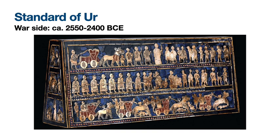We are currently looking at the war side, dated circa 2550 to 2400 BCE. This is read from the bottom up, with the most important figure near the top center. On the bottom row, there are four chariots, each with a driver and a soldier or warrior. It has been debated whether this shows four different chariots or the same chariot in different moments of motion. You can see bodies of enemies literally below them with blood coming out of their wounds.